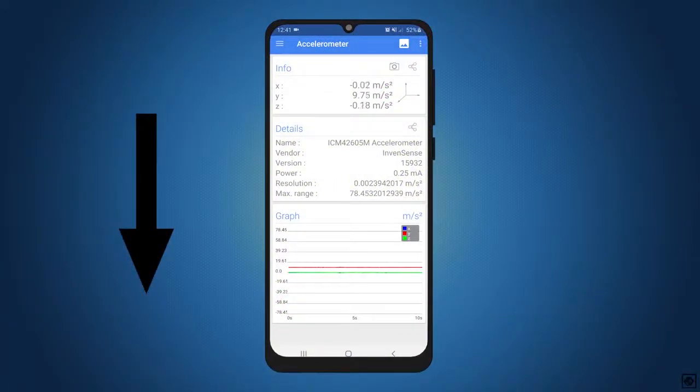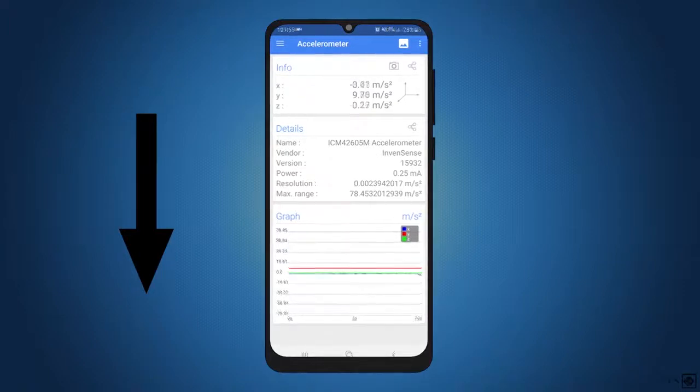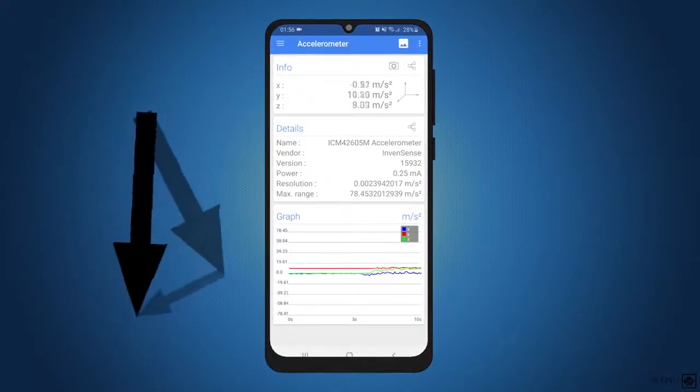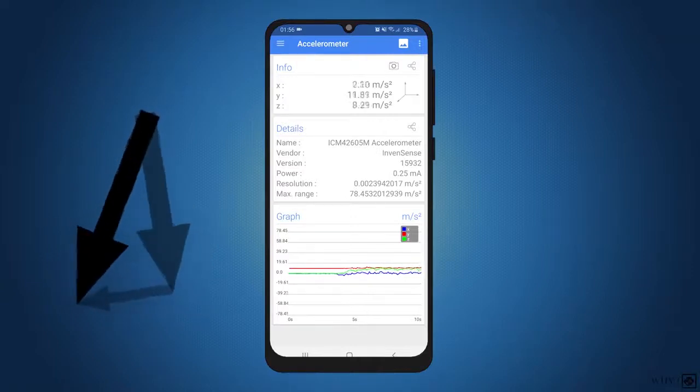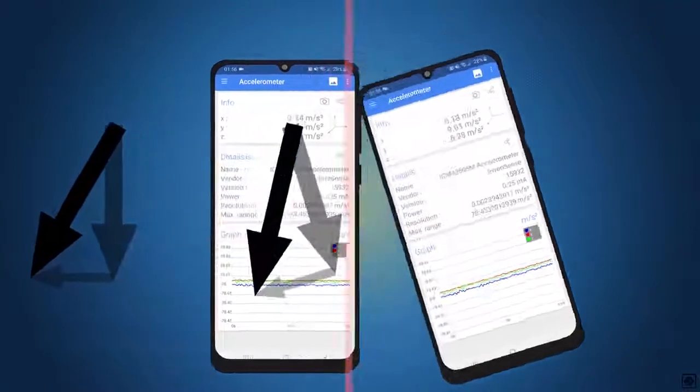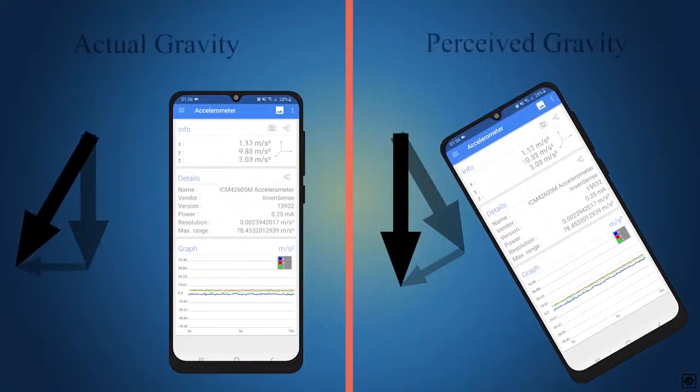So, could we use the accelerometer to detect the phone's rotation? Well, no. Once you start actually moving the phone it becomes impossible to tell which acceleration is true acceleration and which is the gravitational acceleration. The accelerometer will actually detect the perceived gravity, not the actual gravity or acceleration.